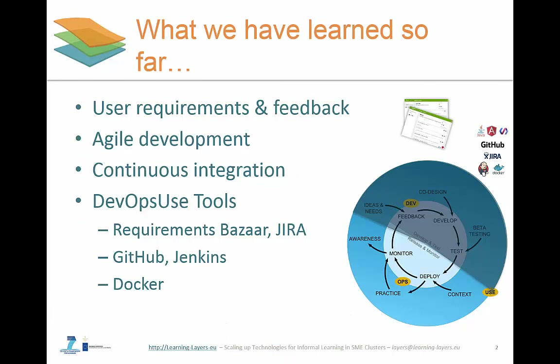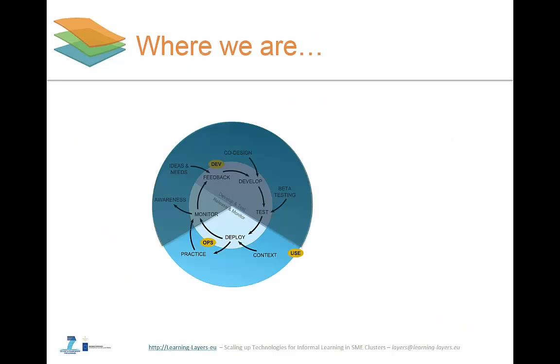In previous webinars we traversed the co-design, develop, and test semicircle of the DevOps use lifecycle. We have seen how users can collect requirements and how improvements, features, and issues can be reported with tools like Requirements Bazaar and Jira. We also covered agile collaborative software development and continuous integration using GitHub and Jenkins. Last but not least, we have seen how deployment in DevOps can be made easy by using the open-source Docker project.